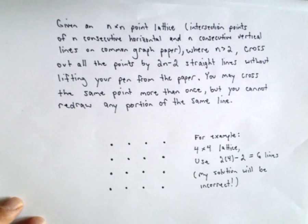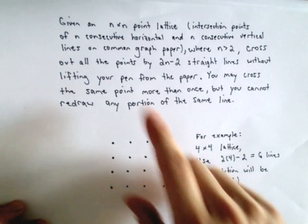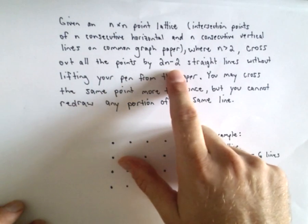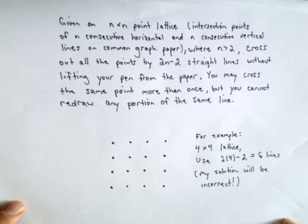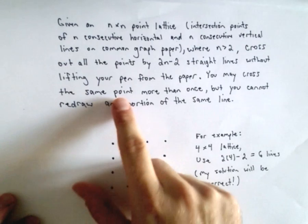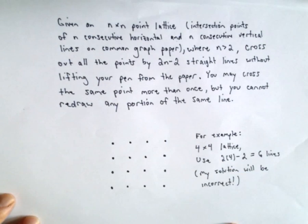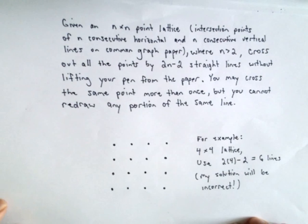We want n to be greater than two. So the goal is you want to cross out all the points by using 2n-2 straight lines without lifting your pen from the paper. So the rules are: you may cross the same point more than once, but you can't redraw any portion of the same line.